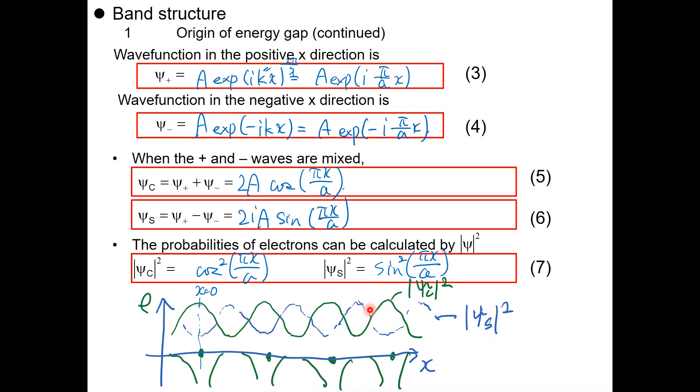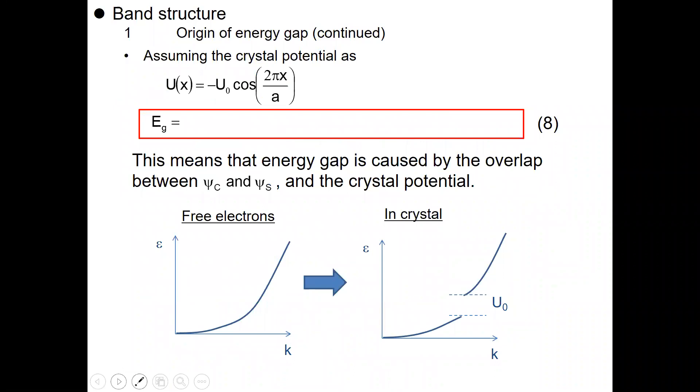So what we are doing now is we have solved the two types of electron wave. And what we found is, under the assumption of the lattice positive lattice potential, we can calculate how much these two types of electron waves interact with the crystal potential.